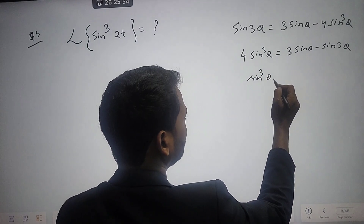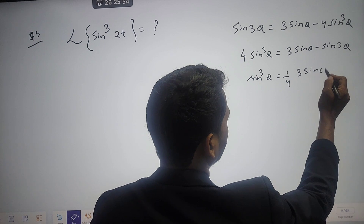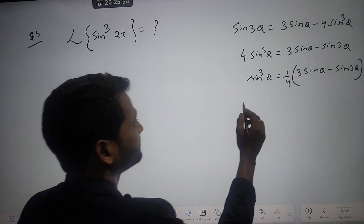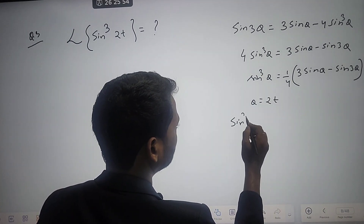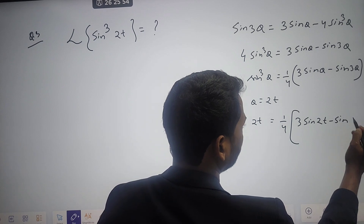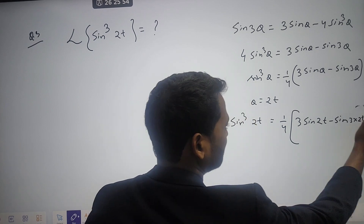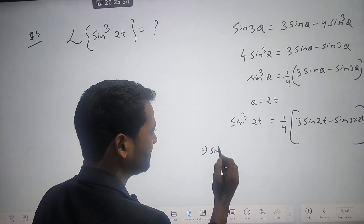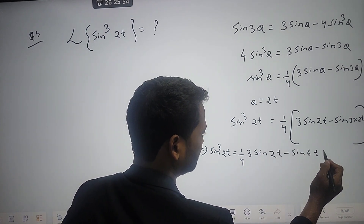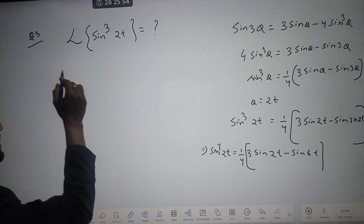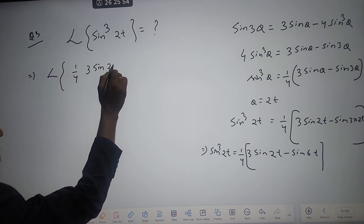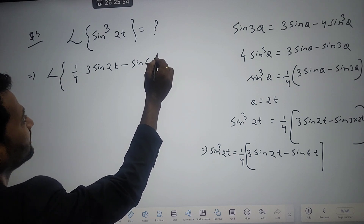Therefore sin³θ = (1/4)[3sinθ − sin(3θ)]. With θ = 2t, sin³(2t) = (1/4)[3sin(2t) − sin(6t)]. So we can write the Laplace of sin³(2t) = (1/4) × Laplace of [3sin(2t) − sin(6t)].